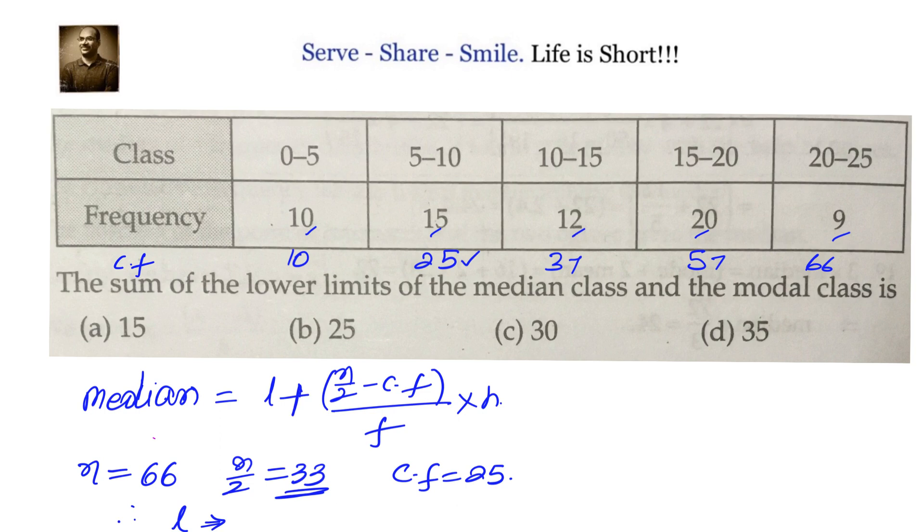record, in the next record we will have the median class. So the median class is 10 to 15. So cf is 25, f is 12, and L is 10 to 15. L is 10.